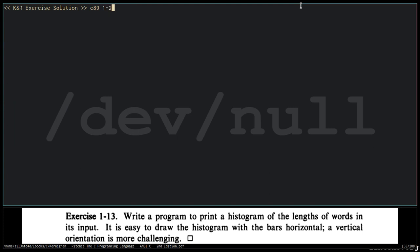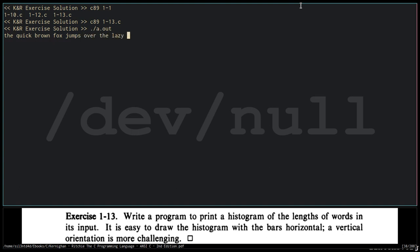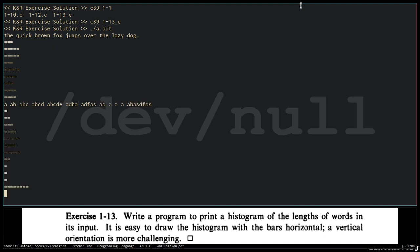Let's compile. So with the quick brown fox as input, we have a histogram. This is the horizontal orientation of the histogram of the lengths of the words in the input.